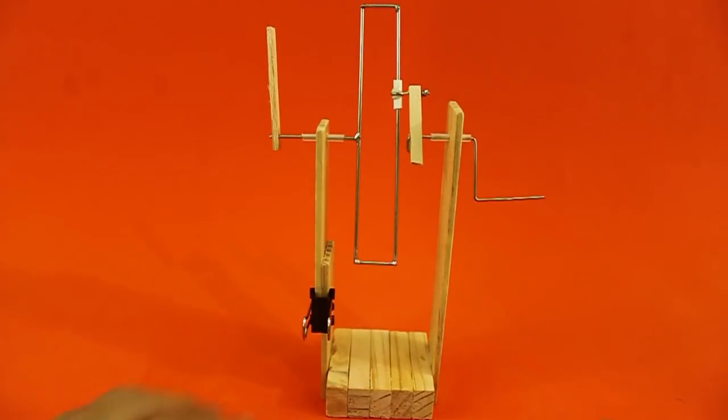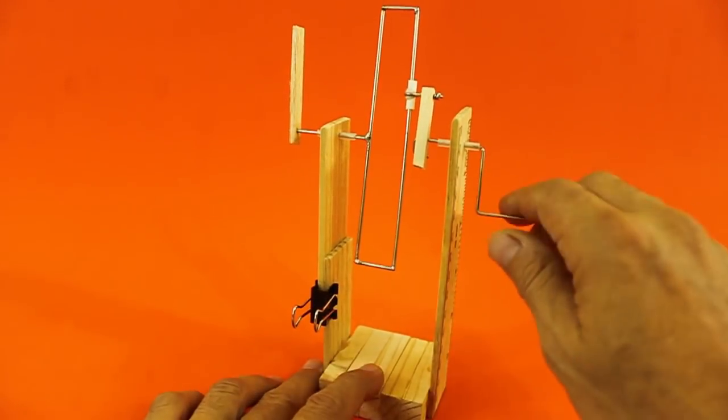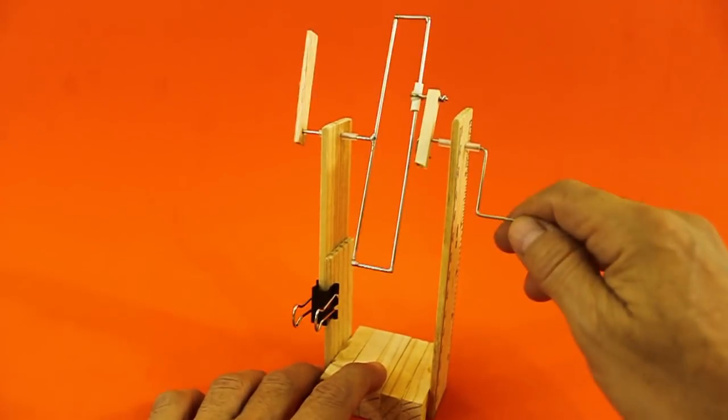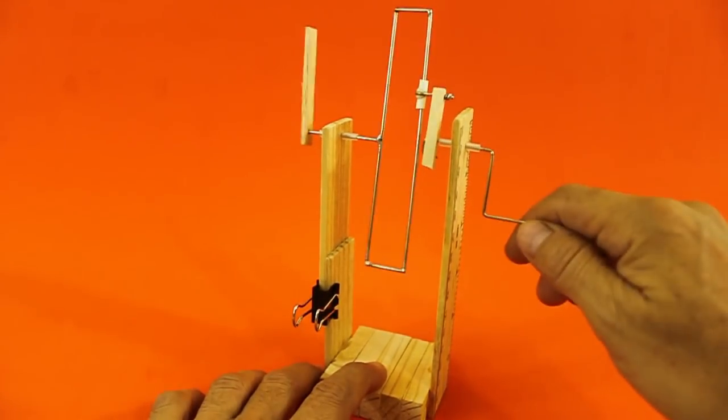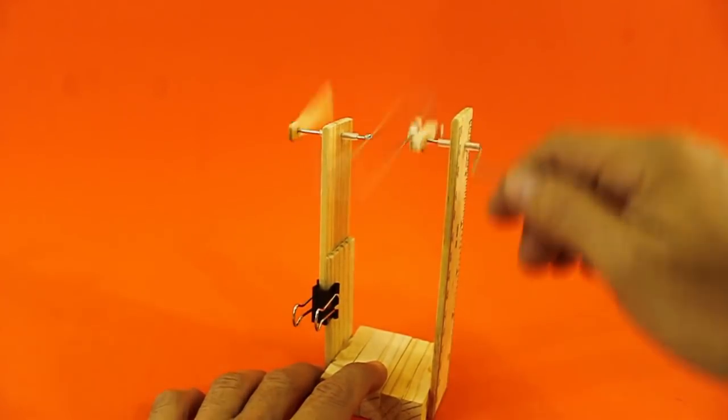The second configuration is when the two axles are collinear. In this case we have a one-to-one transmission. Both axles turn at the same constant speed.